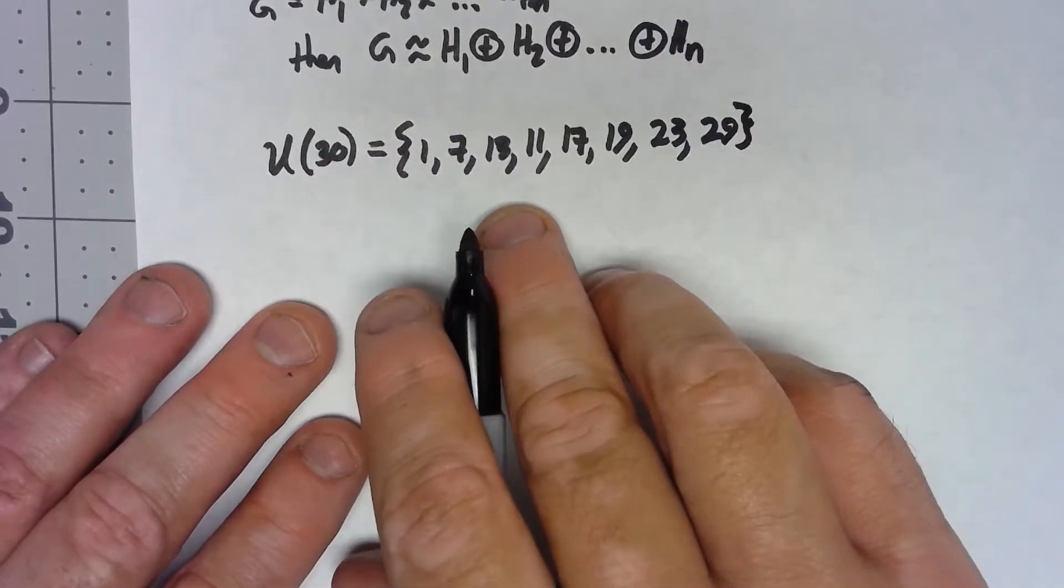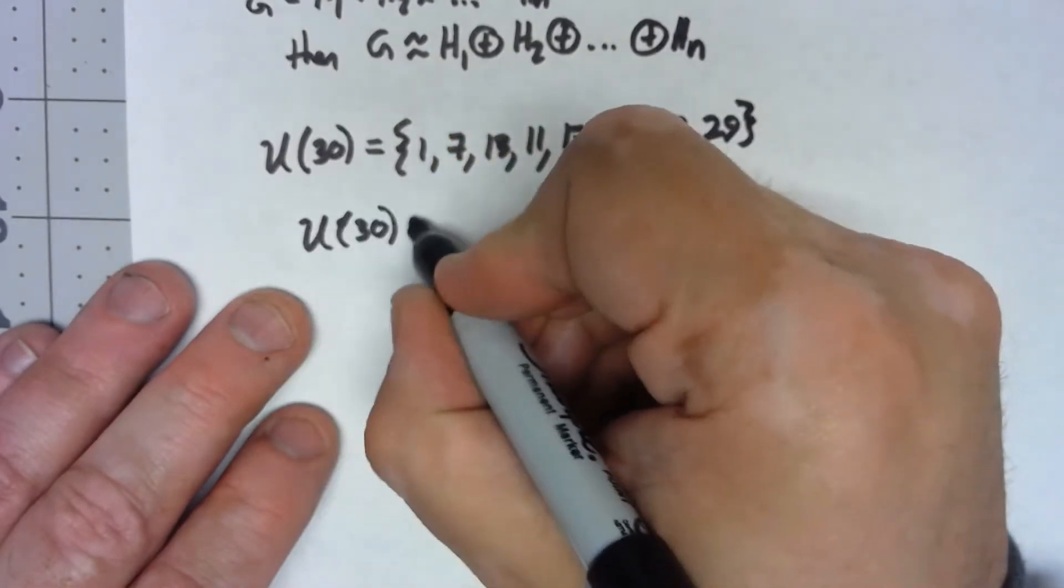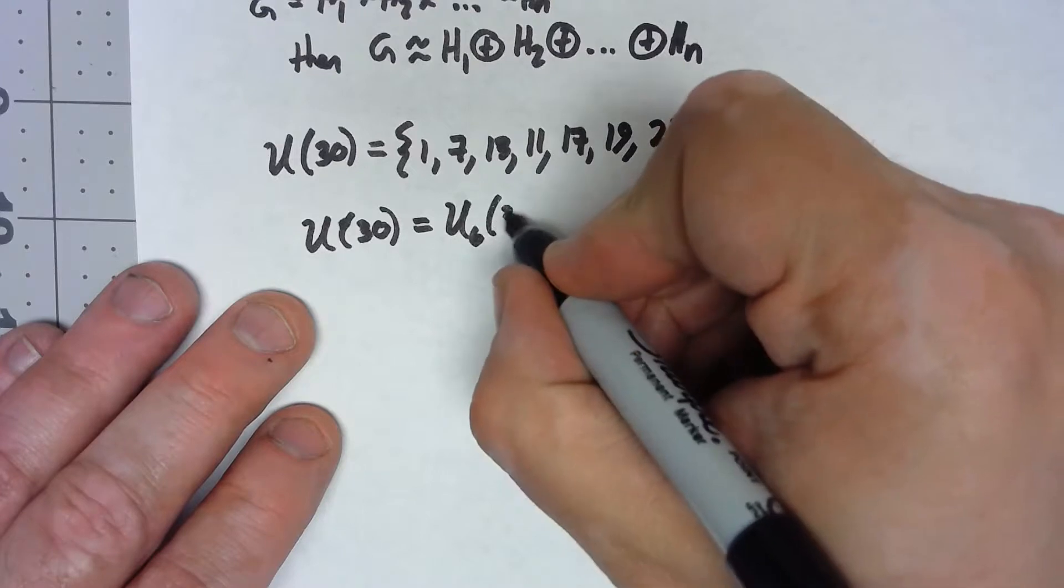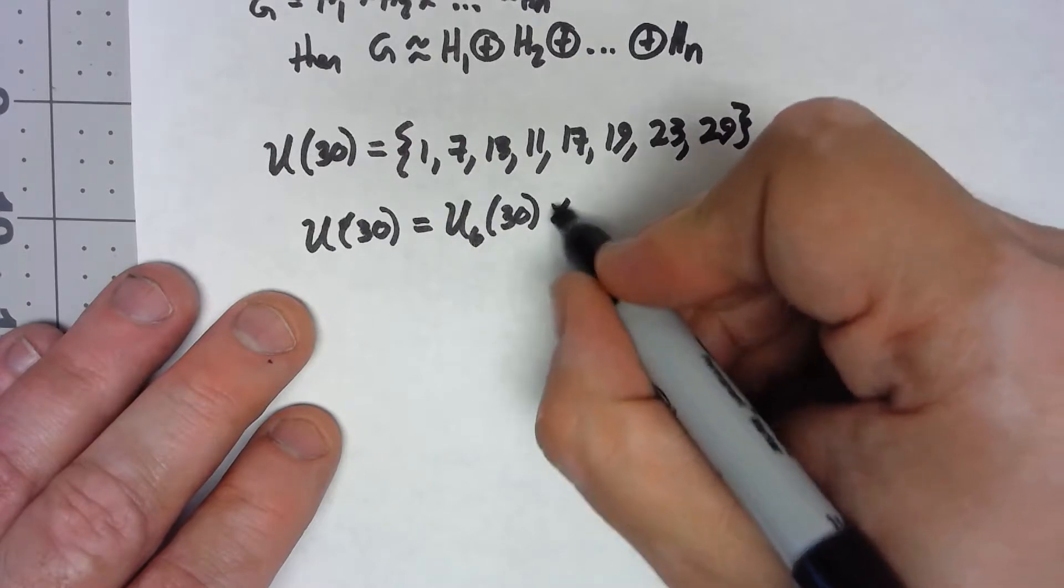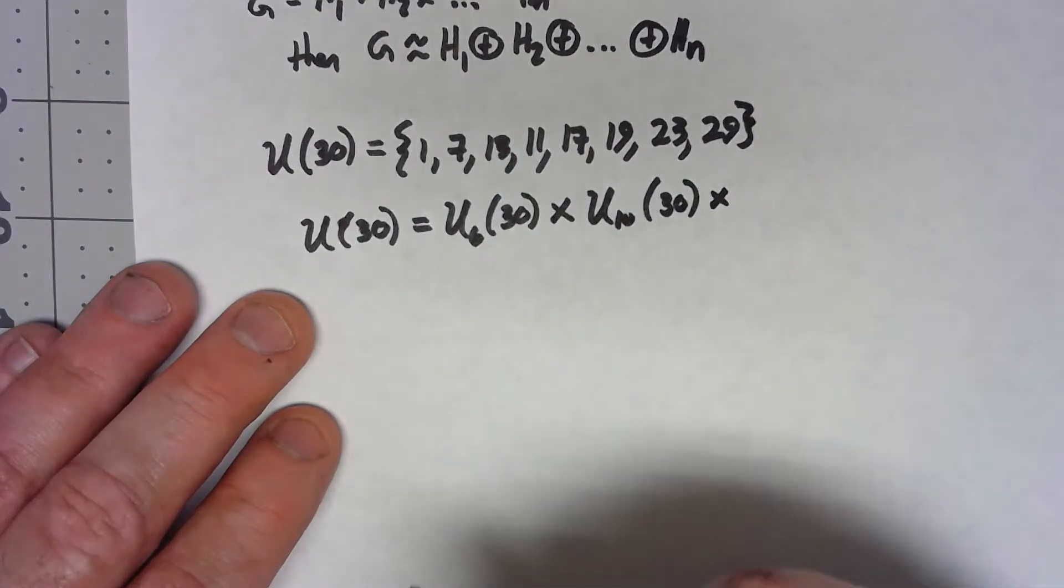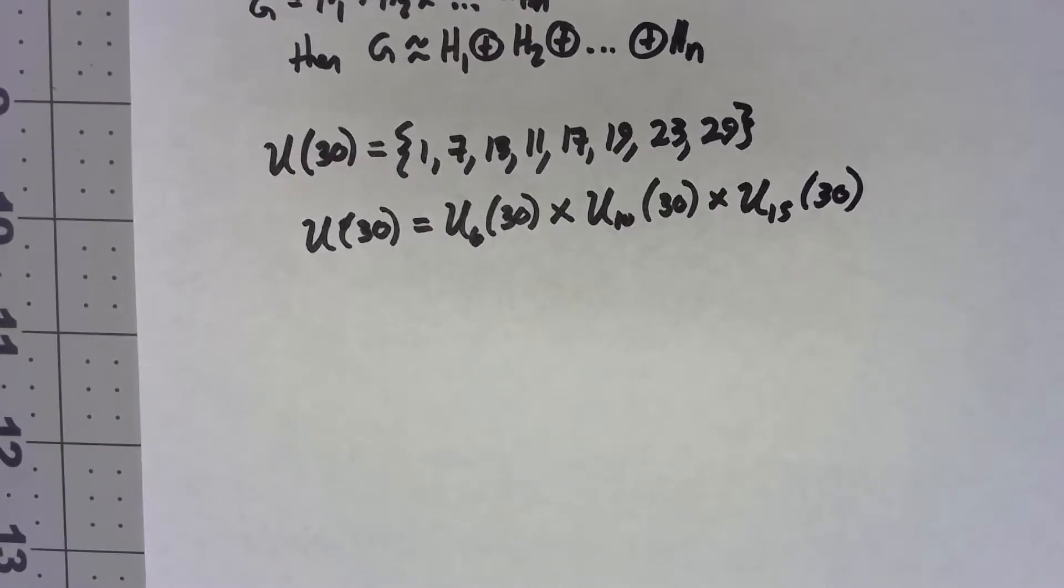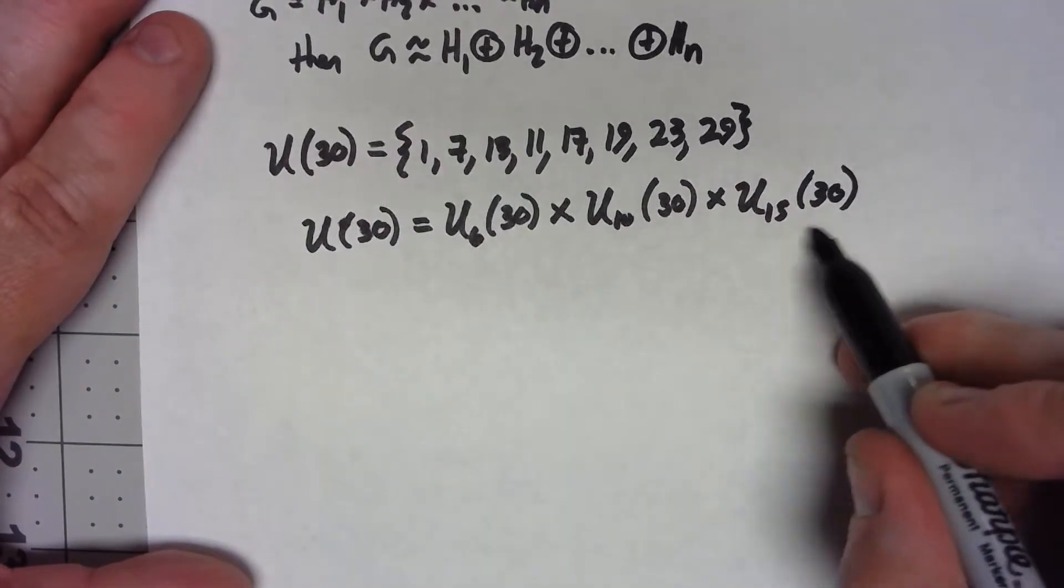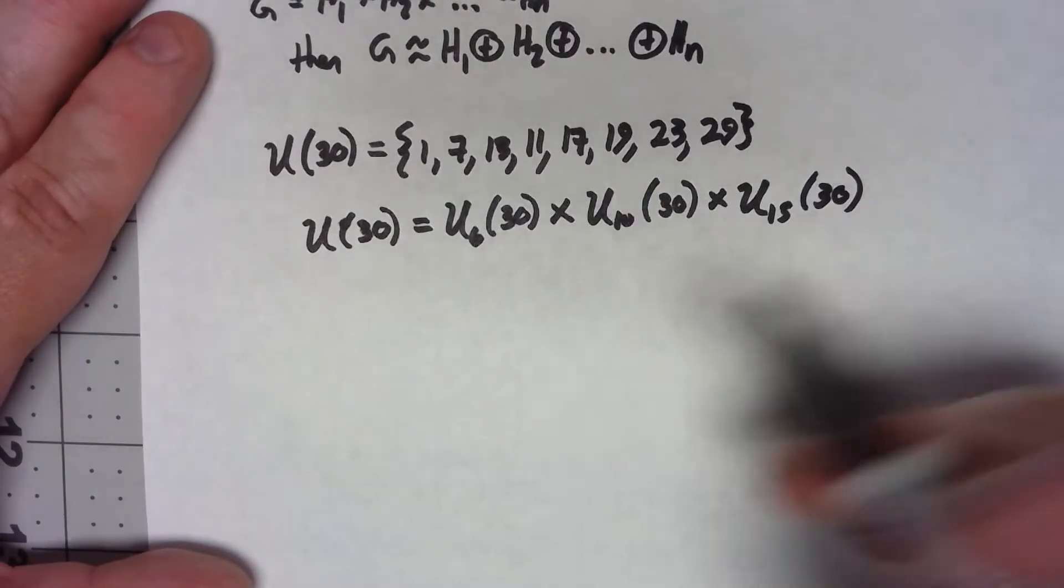I'm going to claim that U30 is equal to U6(30) direct product of U10(30) and direct product U15(30). Now I put in the U15(30) because I want it to be more than two subgroups, but it turns out that U15(30) is actually kind of boring because if we look at this whole list, the only thing that's a multiple of 15 plus 1 is 1.